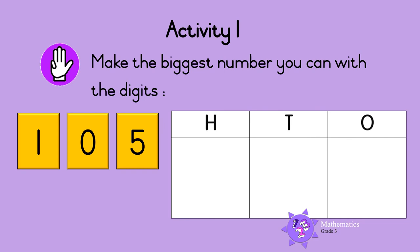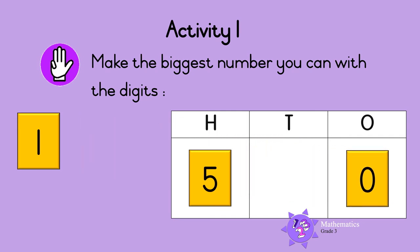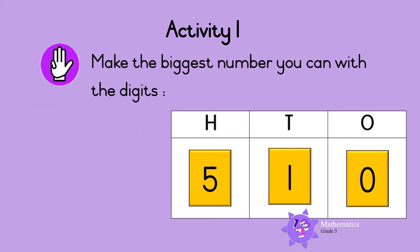Last one. Five is the highest number, so five goes in the hundreds column. Zero is the lowest number, so zero goes in the ones column. Then write the remaining digit in the tens column, so one is in the tens column. The biggest number we can make is five hundred and ten. Don't forget to write the zero — fifty-one and five hundred and ten are not the same thing.